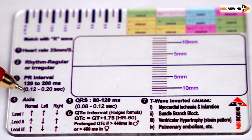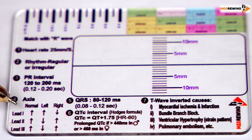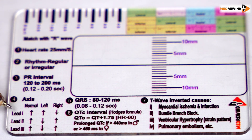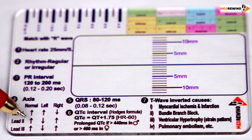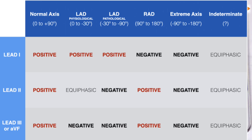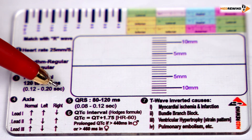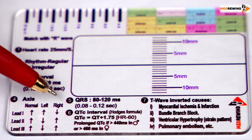Coming to Step 4, it is regarding the axis. We need to determine the axis by using leads 1, 2, and 3. If it is normal, all the leads are positive, and we can also see whether left axis deviation or right axis deviation is present.